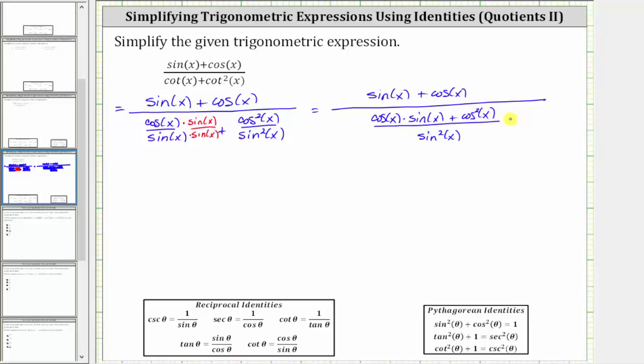But now notice in the numerator, we do have a common factor of cosine x. Let's factor out the common factor of cosine x from this sum. After factoring, we're left with sine x plus cosine x.